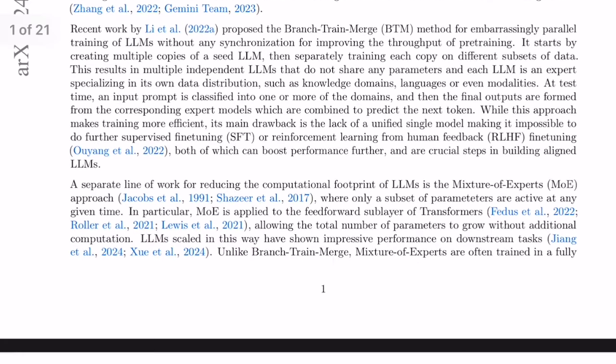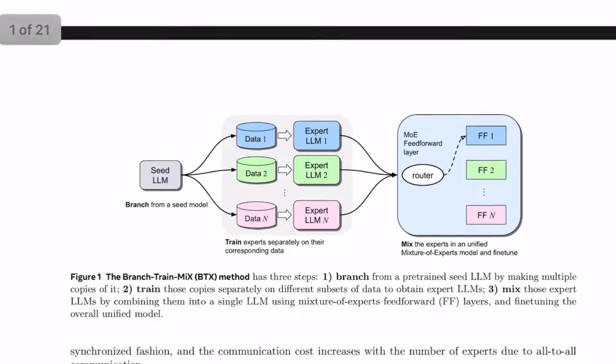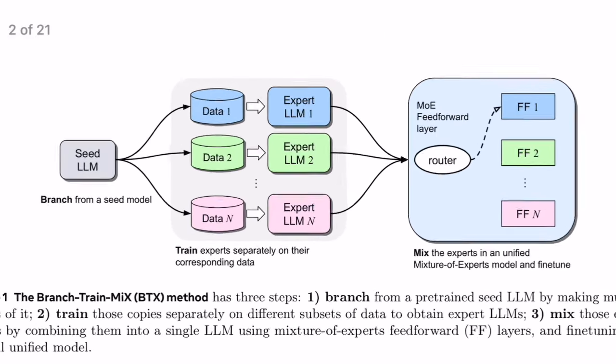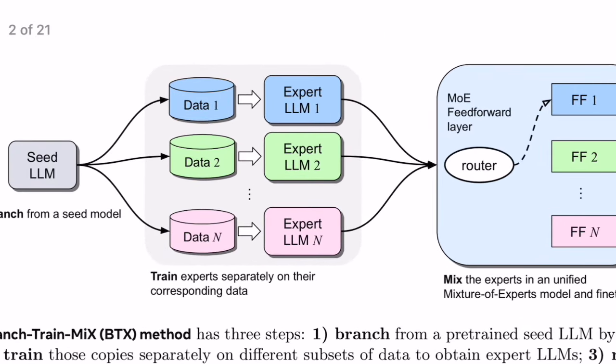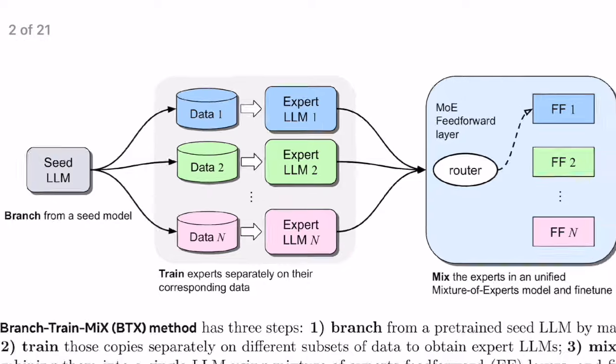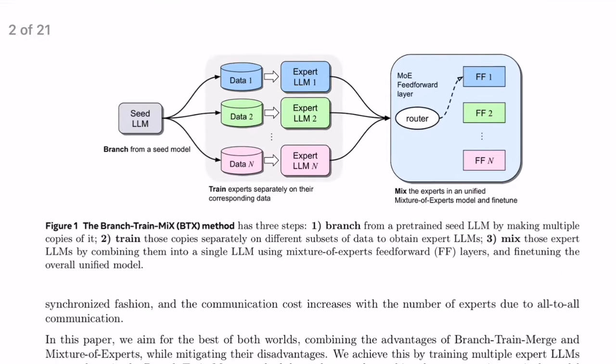Step 1: Branching. The process begins with a single seed model. This model is then branched into multiple copies, each destined to become an expert in a specific domain like coding, math, or general knowledge.